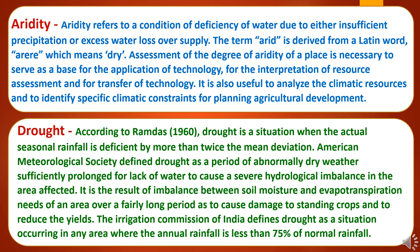Now we will proceed to study aridity and drought. Aridity refers to a condition of deficiency of water due to either insufficient precipitation or excess water loss over supply. The term 'arid' is derived from a Latin word meaning dry. Assessment of the degree of aridity of a place is necessary as a base for application of technology, interpretation of resource assessment, and transfer of technology. According to Ramdas, drought is a situation when the actual seasonal rainfall is deficient by more than twice the mean deviation. The American Meteorological Society defines drought as a period of abnormally dry weather sufficiently prolonged for lack of water to cause a severe hydrological imbalance in the affected area.